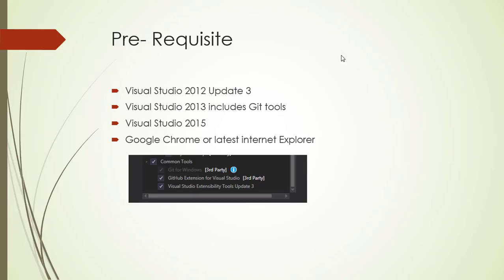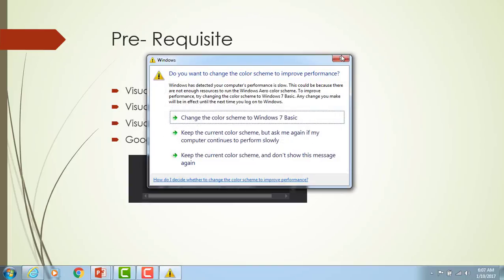Coming to the prerequisites: we need to install at least Visual Studio 2012 with Update 3, or Visual Studio 2013 which includes Git tools, or Visual Studio 2015 on our local machine. We strongly recommend installing the latest browser — latest IE version or Google Chrome. When installing Visual Studio 2015, please select the following options: Git for Windows (third-party), GitHub Extension for Visual Studio (third-party), and Visual Studio Extensibility Tools Update 3.